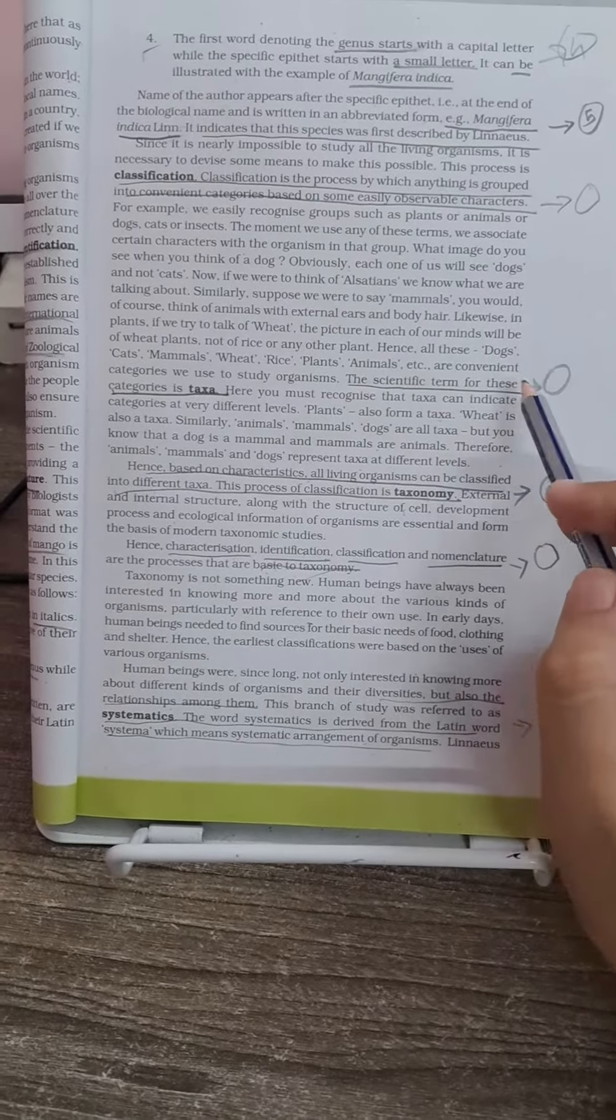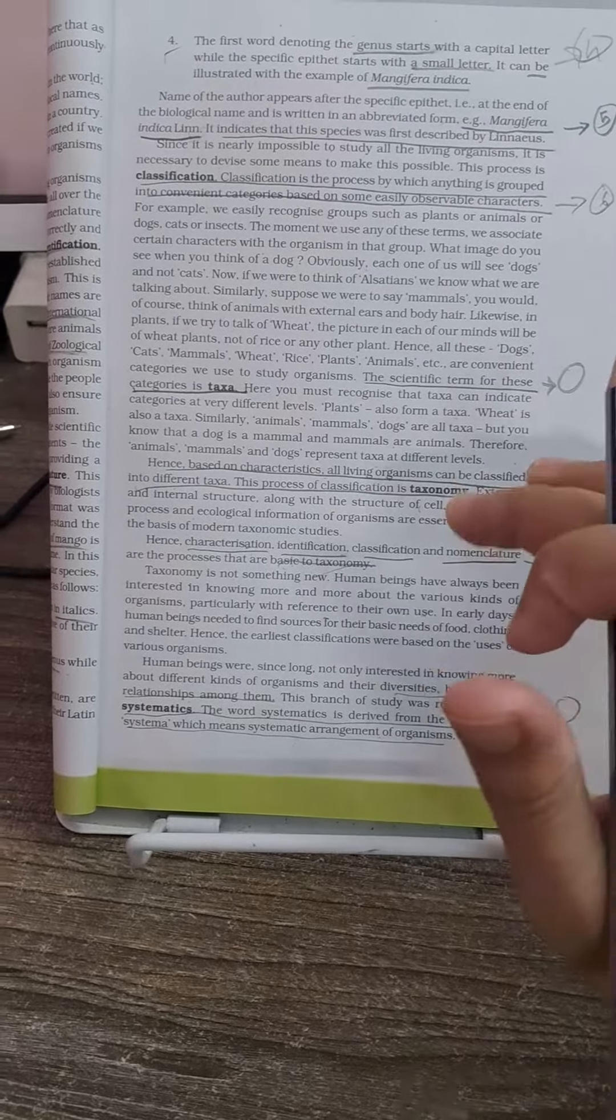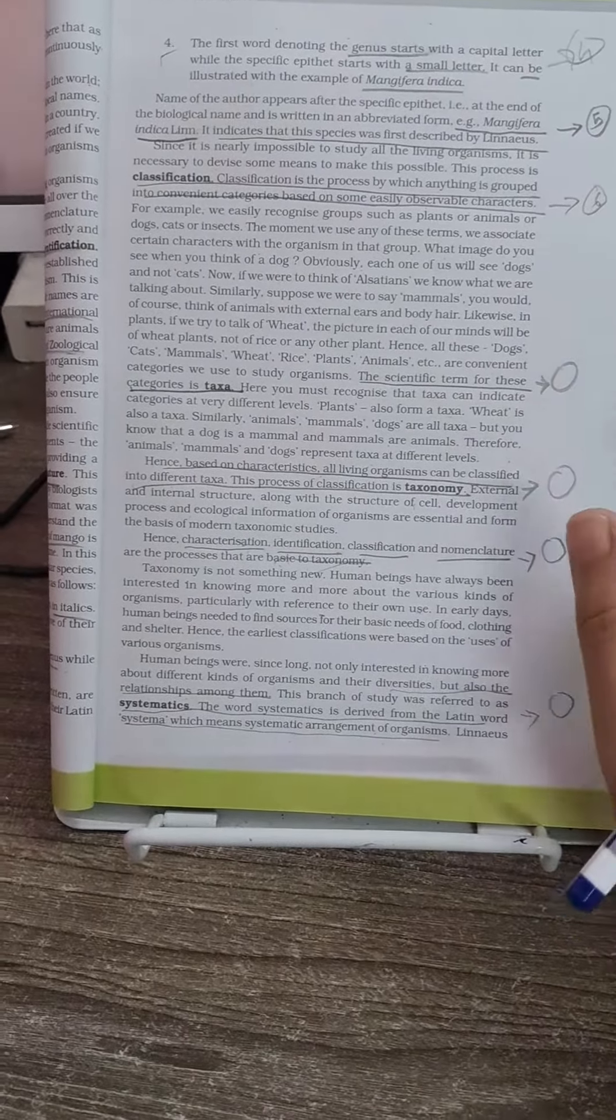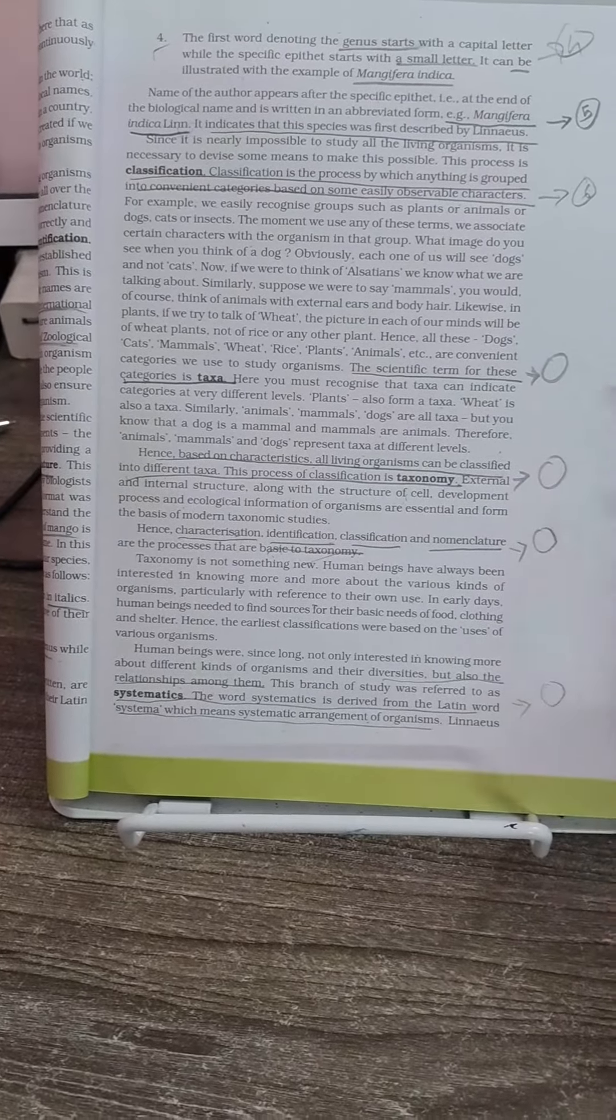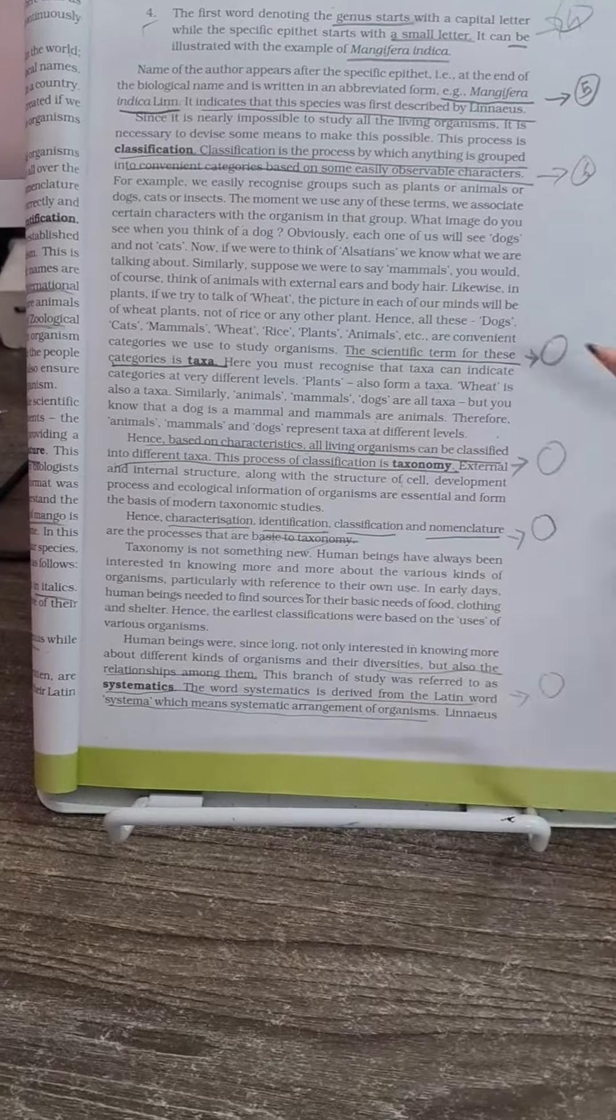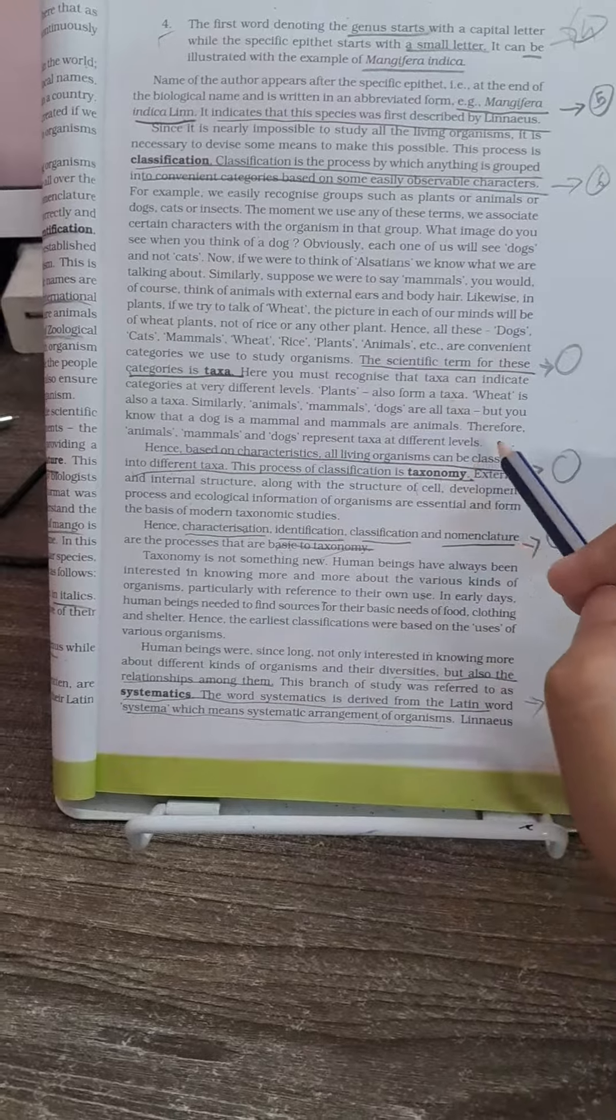They will give you some examples like various species, various animals, and they will ask you whether this is taxa or this is taxonomy, or they will give you other options like systematics. What is the correct option? So you have to be very clear about what is taxa, what is taxonomy.